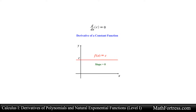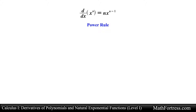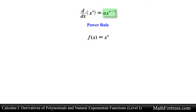Let's proceed with our next rule. The second derivative rule is called the power rule. This rule is used to take derivatives of power functions of the form f equals x raised to the power of n. The rule states that the derivative of a power function whose exponent is n is equal to n times the power function raised to the power of n minus 1. You bring down the exponent and subtract 1 from the original exponent, which becomes the new exponent.